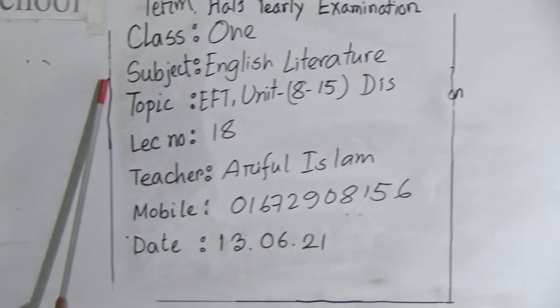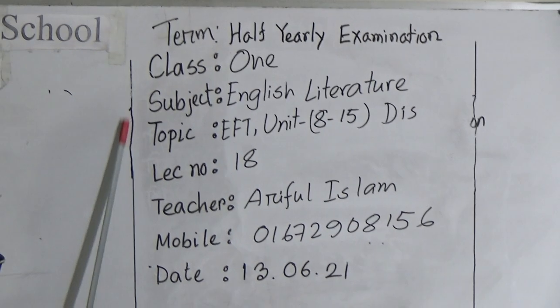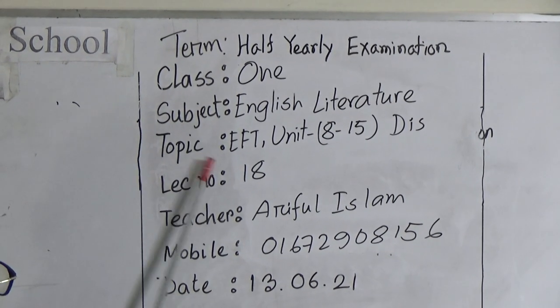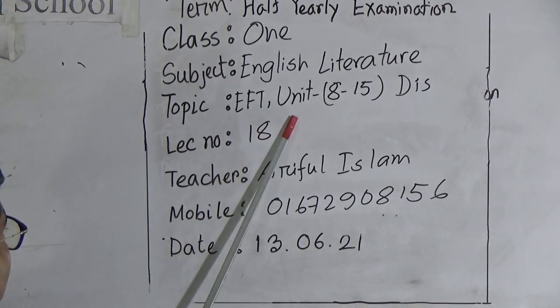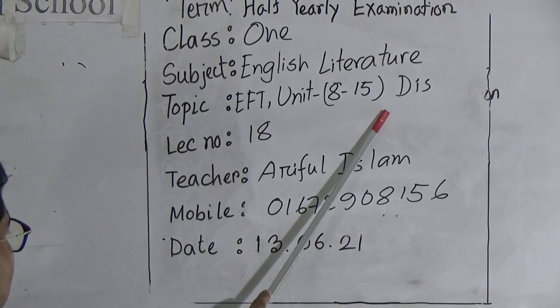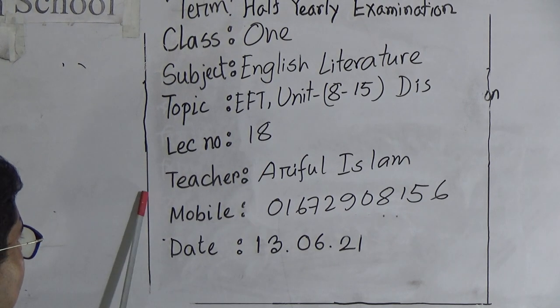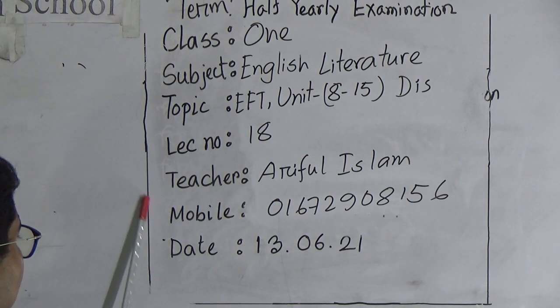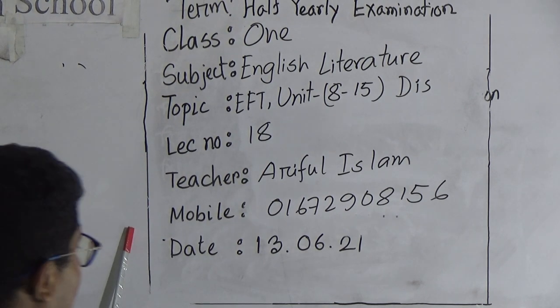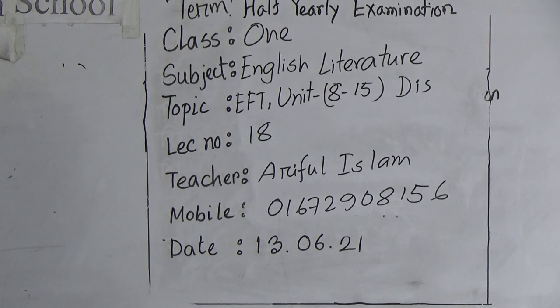So let's see our today's class: Term Final Examination, Class One, Subject: English Literature. Topic: English for Today book, lessons 8 to 15 discussion. Lecture number 18 by Ariful Islam. This is my mobile number and today's date.